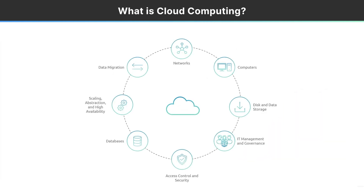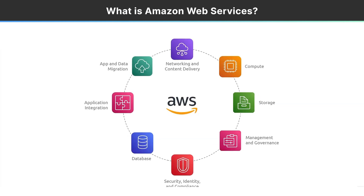Looking back at the cloud computing diagram, the basic components are there: networking, computers, disk and data storage, governance, security, and all that. Imagine all of these replaced with specific services or groups of services inside AWS. The secret sauce is that AWS wants to consume your operational overhead and some of your security overhead — they want you to spend your money with them so they can take that off your plate.